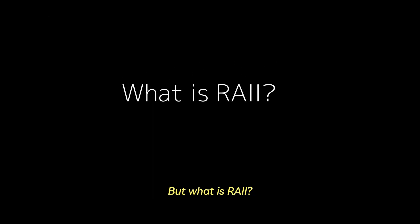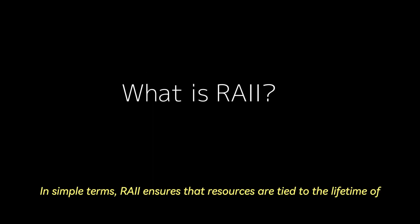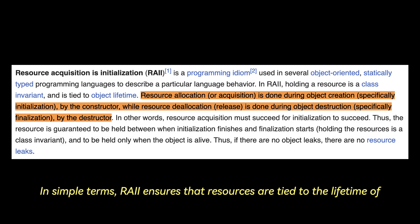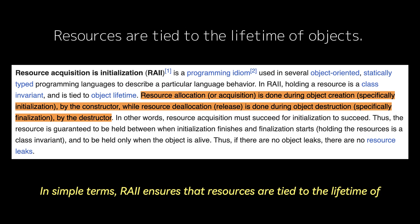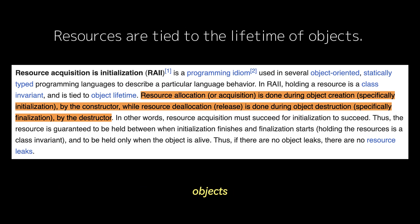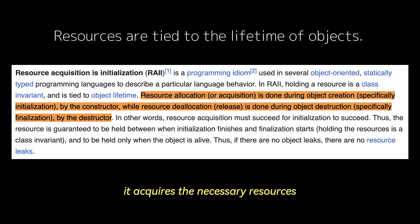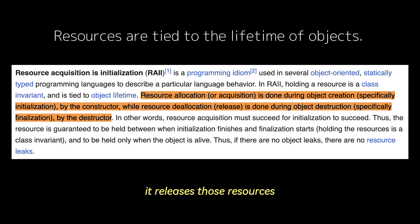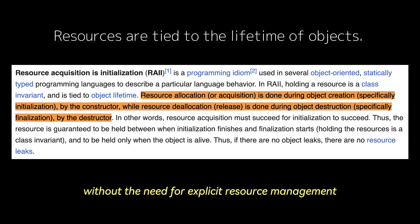But what is RAII? In simple terms, RAII ensures that resources are tied to the lifetime of objects. When an object is created, it acquires the necessary resources, and when it goes out of scope — for example, it's destroyed — it releases those resources. This is done automatically without the need for explicit resource management like using malloc or free, and open or close.